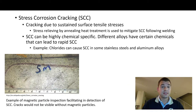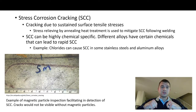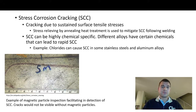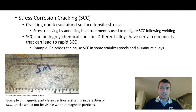Stress corrosion cracking is cracking due to sustained surface tensile stresses. It can be relieved by annealing heat treatment following welding — when you weld a metal and it heats and cools, it can be left with residual stresses. Post-weld heat treatment (PWHT) removes those residual stresses and mitigates stress corrosion cracking. This is highly chemical-specific, so you need to be careful about what alloy you're using. For example, chlorides can cause SCC in some stainless steels and aluminum alloys — so alongside water and oxygen, chlorides are another key concern.